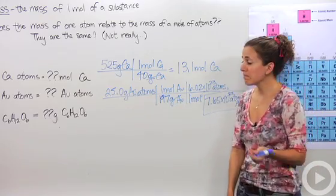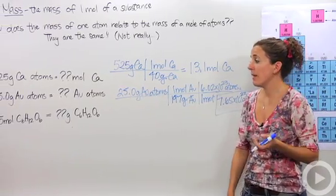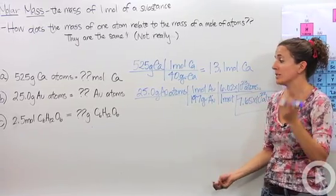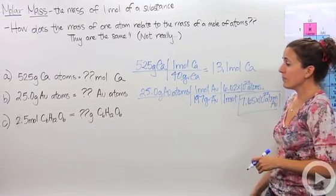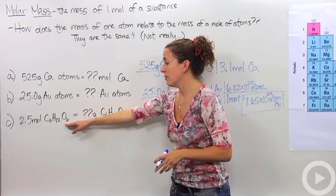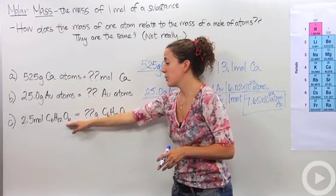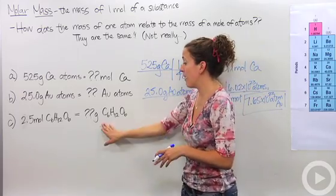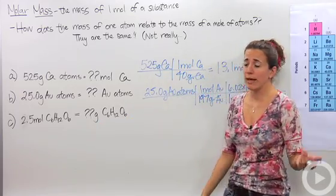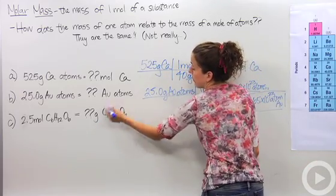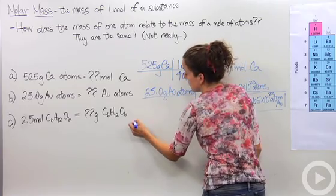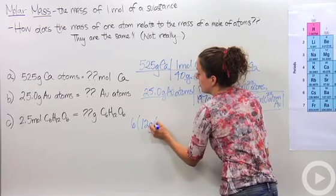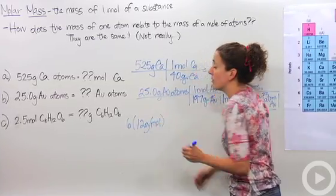That molar mass is very helpful. Now, instead of atoms, let's talk about molar masses of compounds — those are actually more typically used. We have 2.5 moles of glucose, C6H12O6. How much does that weigh? We have to figure out the mass of one mole of glucose by breaking it into its atoms. We have 6 carbon atoms, and carbon has a mass of approximately 12 grams per mole from the periodic table.